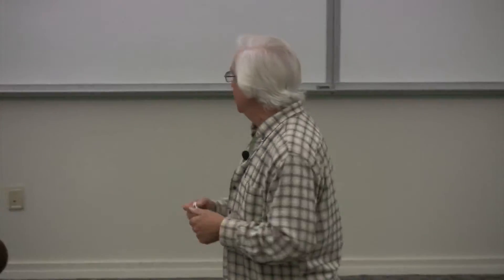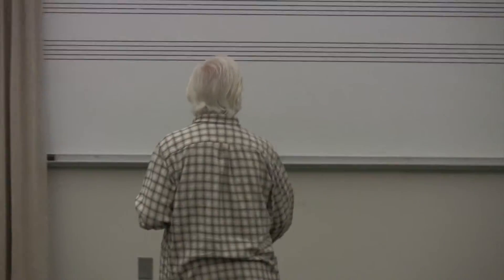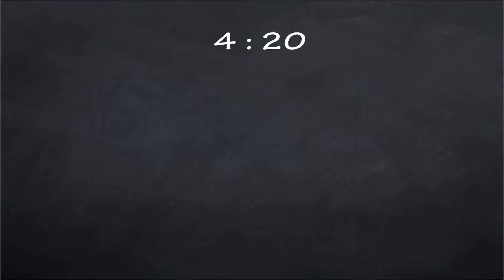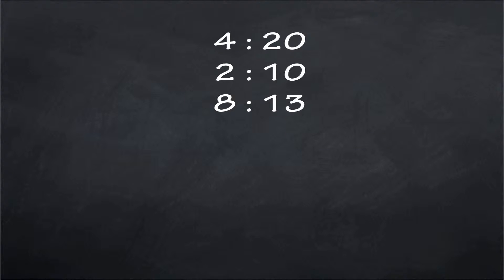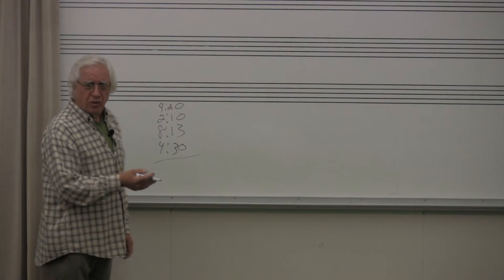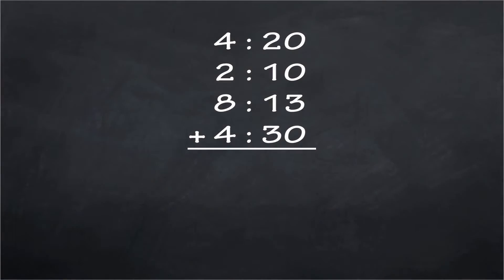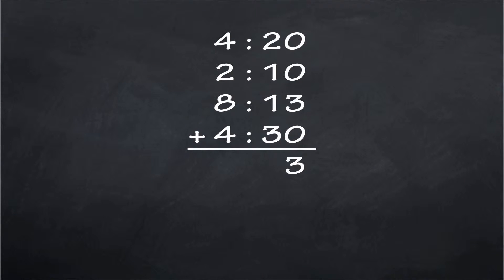Let's say you need to add 4 minutes 20 seconds, 2 minutes 10 seconds, 8 minutes 13 seconds, and 4 minutes 30 seconds. You add the seconds — 20, 10, 13, 30 — that's 73 seconds, which converts. Then add the minutes to get 19 minutes and 13 seconds.